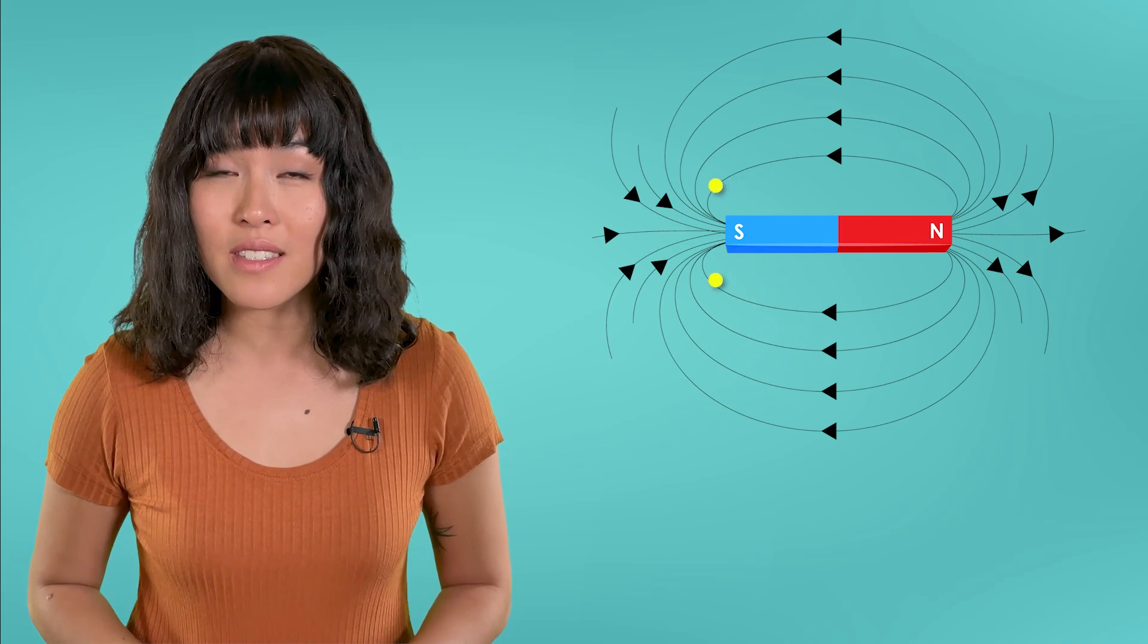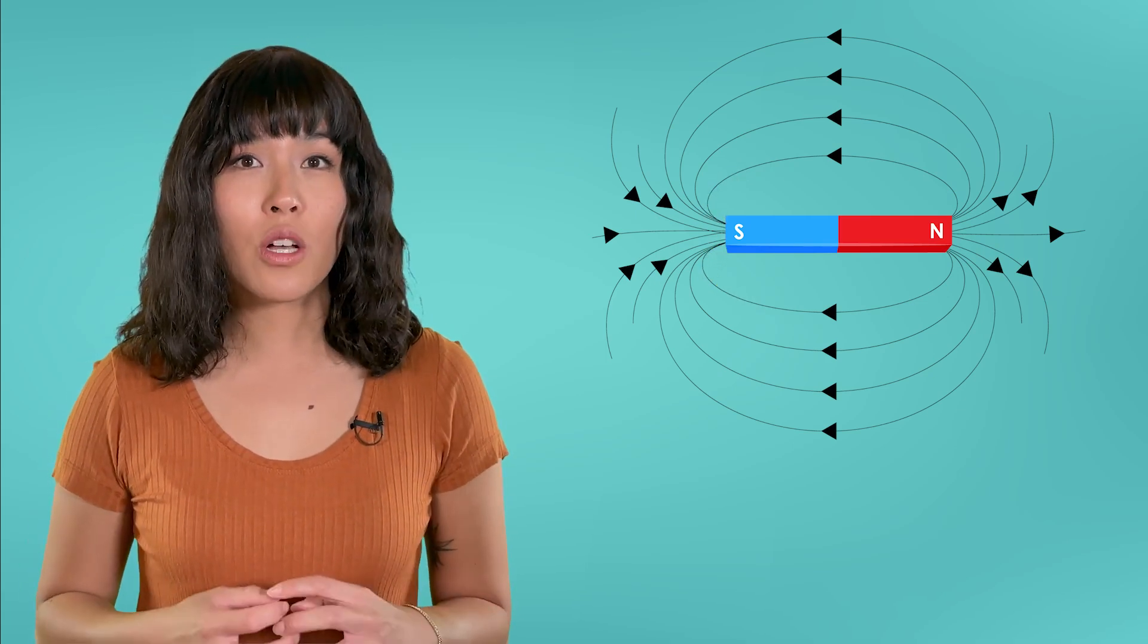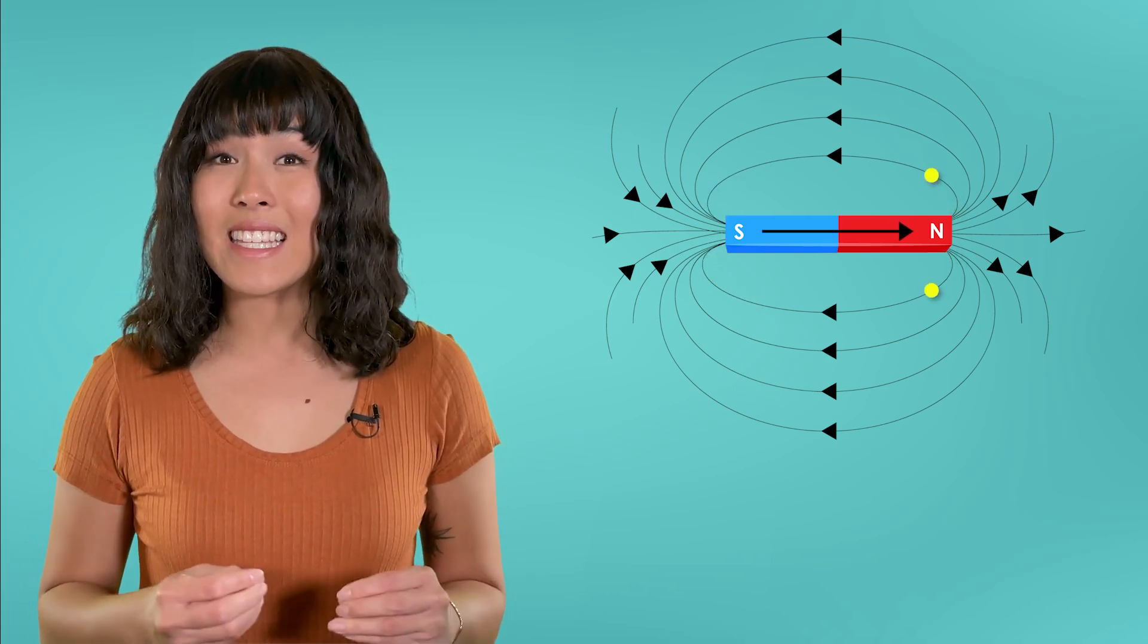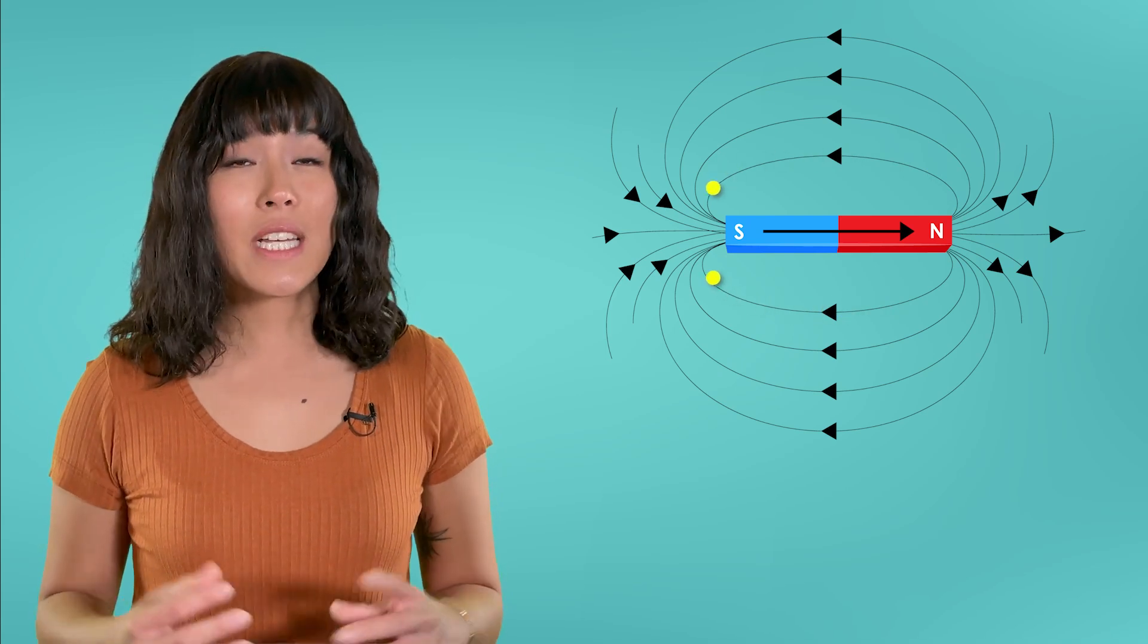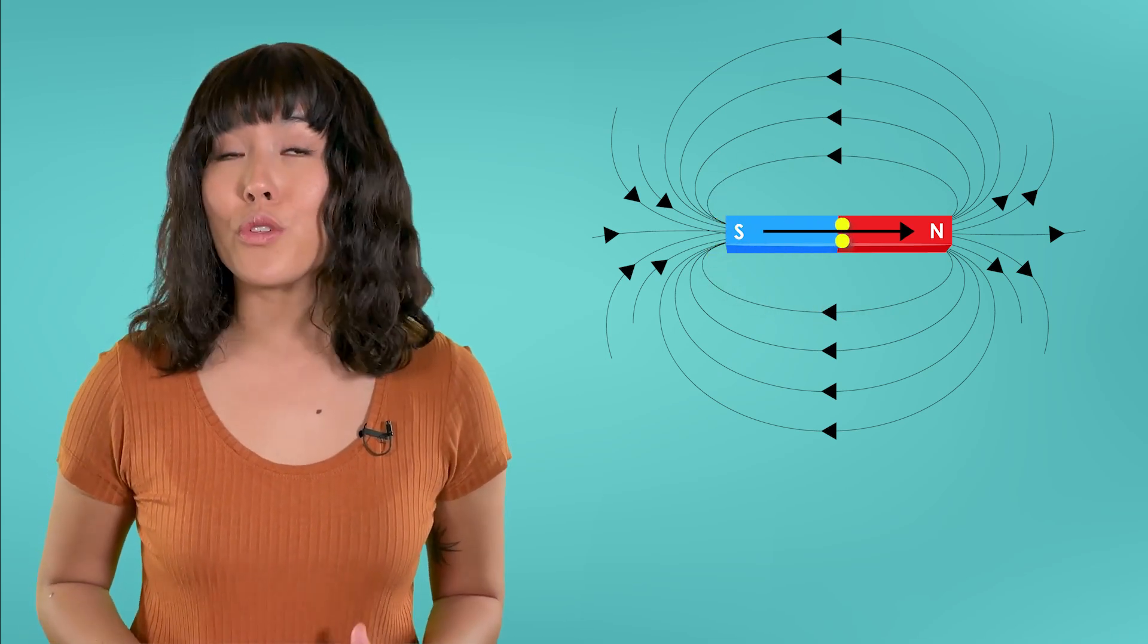But just like electrical circuits, the magnetic field creates a closed loop, which means that inside the magnet, the lines would continue flowing from the south pole to the north pole.